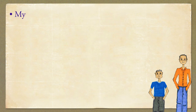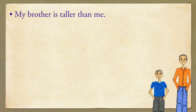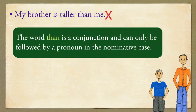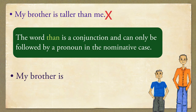The next one is: My brother is taller than me. Please note, the word 'than' is a conjunction and can only be followed by a pronoun in the nominative case. Now repeat the correct sentence after me: My brother is taller than I.